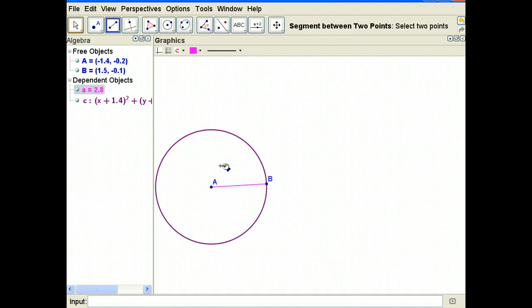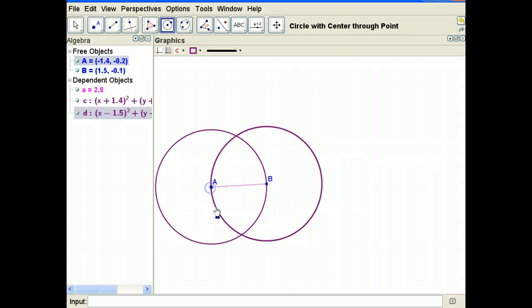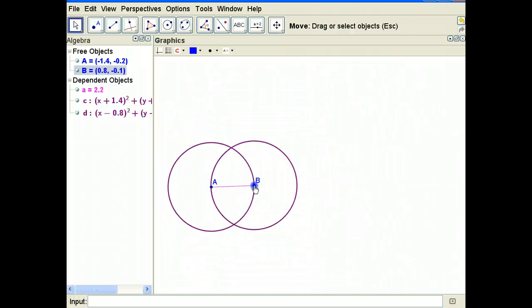To construct an equilateral triangle notice that we're not drawing an equilateral triangle here. We're not doing it freehand. We're constructing an equilateral triangle. Our next step is we are going to create another circle. The second circle is going to have a center at point B and A will be sitting on its circumference. Click on B that'll be our center and we will click on A to create that second circle. Now we have two circles intersecting each other.